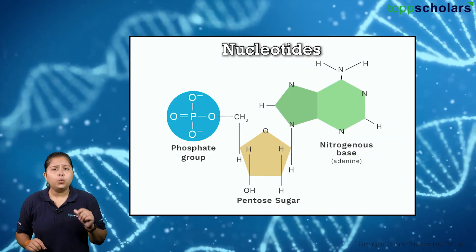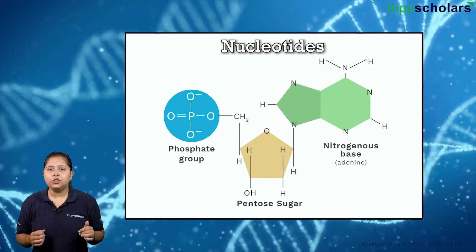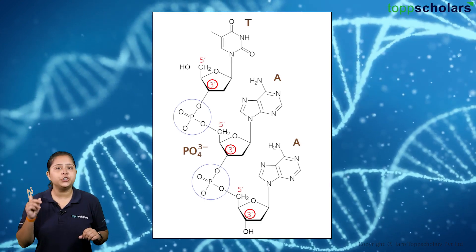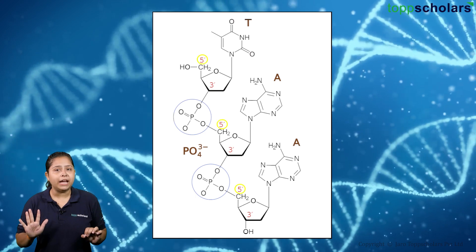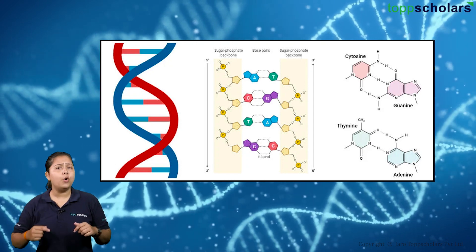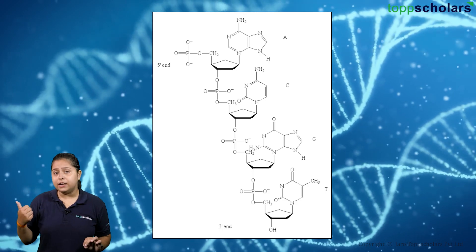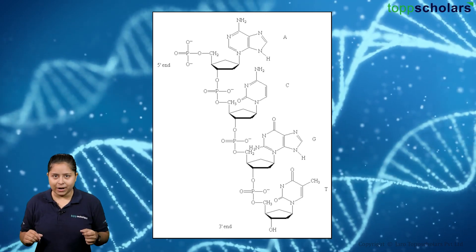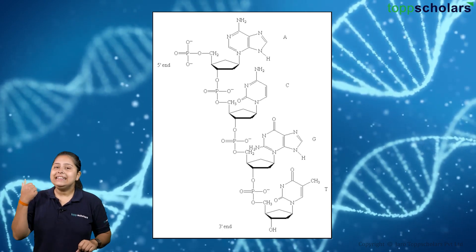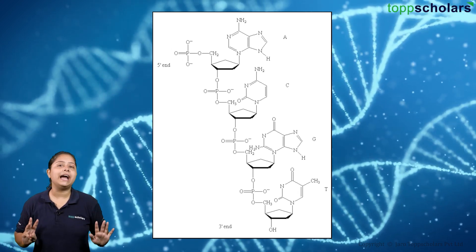Before that, we need to understand the binding of nucleotides. It is due to the formation of phosphodiester bonds. Here, the 3' carbon of the sugar molecule binds to the 5' end of the next sugar molecule. This bonding goes on in both strands as required. Finally, at this end the 5' phosphate is free, and here we have the 3' OH which is free. Hence, this is the 5' end, and yes — you guessed it — this is the 3' end.